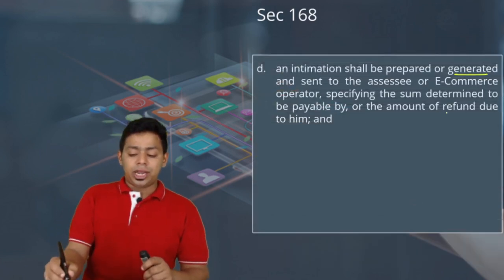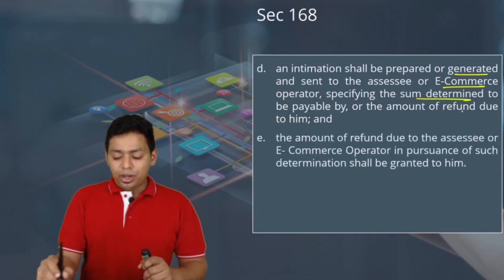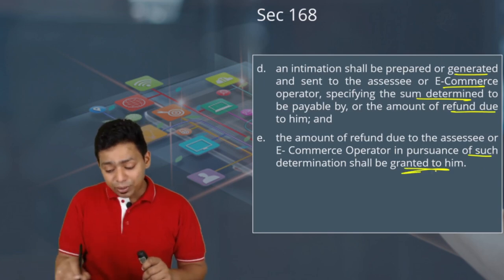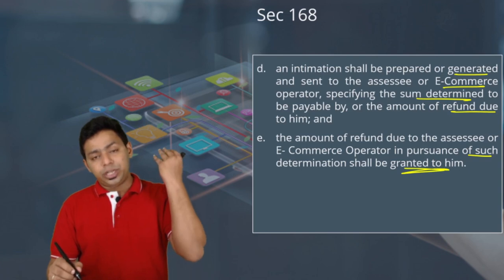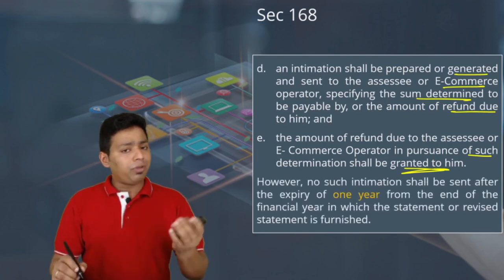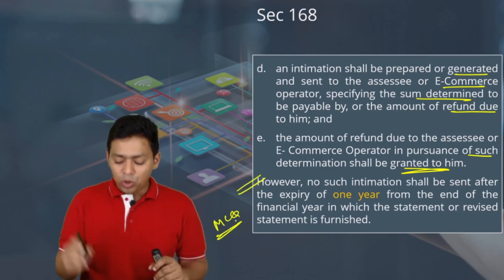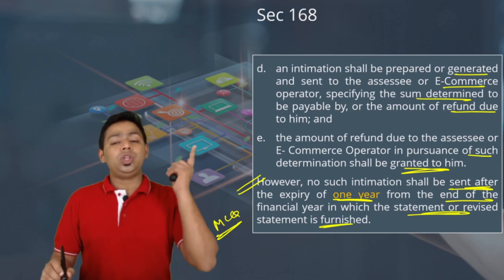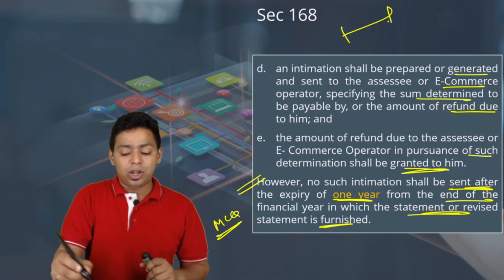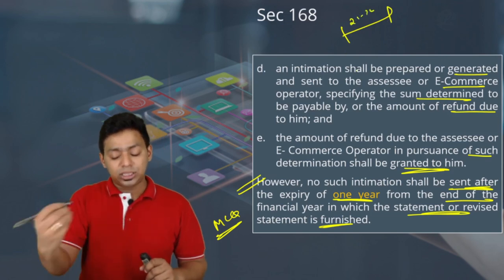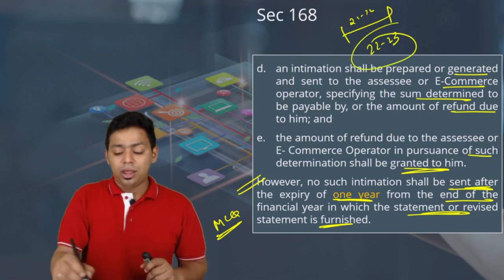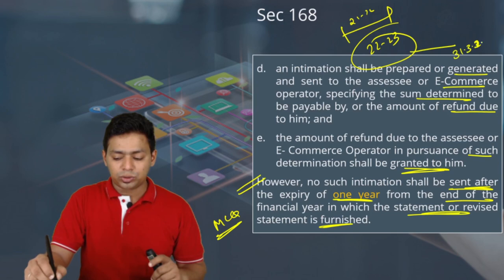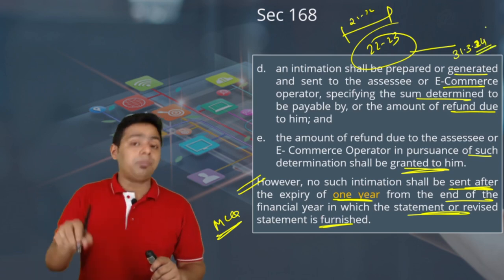An intimation shall be prepared or generated and sent to the assessee or e-commerce operator specifying the sum determined or refund due. If a refund is due, it shall be granted automatically — no separate application is required, just as in income tax. However, no intimation shall be sent after the expiry of one year from the end of the financial year in which such statement or revised statement was furnished — not from when the levy was paid.